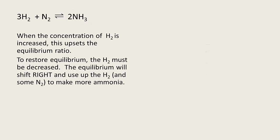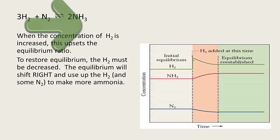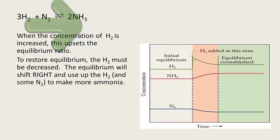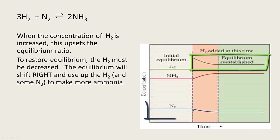Let's have a look at this on a rate graph. The initial equilibrium concentrations for the system are shown for nitrogen, ammonia and hydrogen. When you add hydrogen, it increases up to here, which upsets the equilibrium ratio. The rate of the forward reaction will increase and the equilibrium will shift to the right to minimise the effect of this change. This will result in an increase in the concentration of ammonia, and a decrease in the concentration of both nitrogen and hydrogen as ammonia is being made.